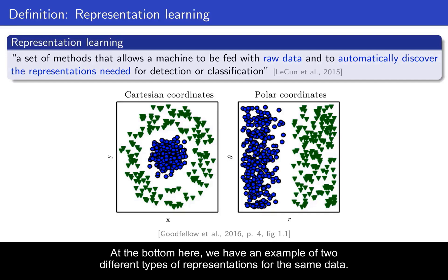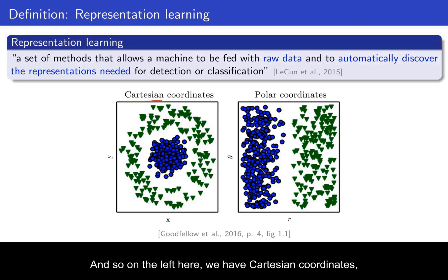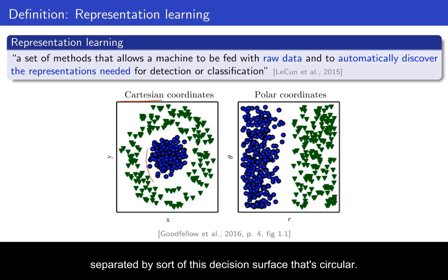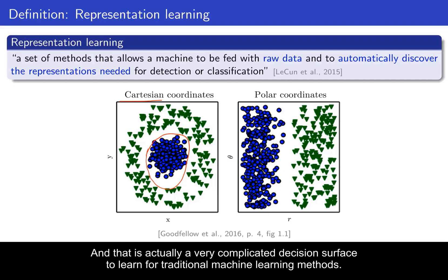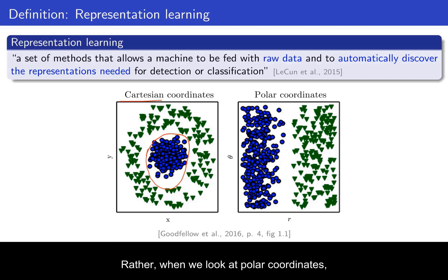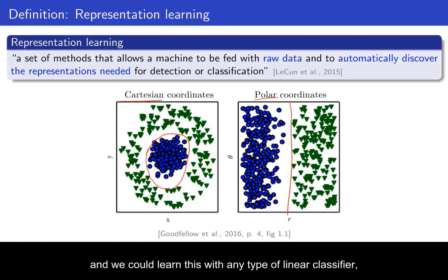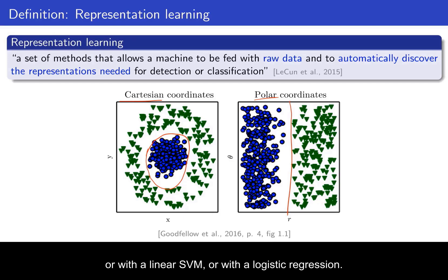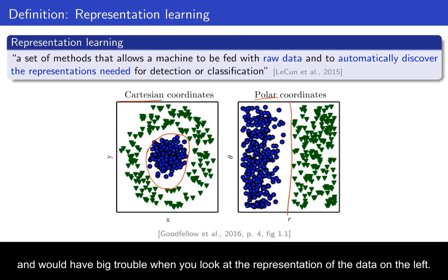Here we have an example of two different types of representations for the same data. On the left, we have Cartesian coordinates, and we see that the blue class and the green class are separated by a circular decision surface — a very complicated decision surface to learn for traditional machine learning methods. When we look at polar coordinates, the data is trivially linearly separable, and we could learn this with any linear classifier, even just a decision stump, a linear SVM, or logistic regression.